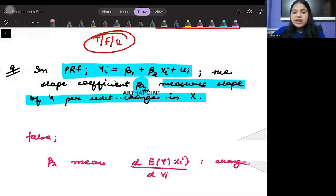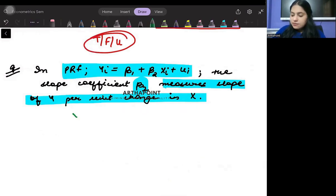Now you need to understand that when I go ahead and write the population regression function, yi equals beta 1 plus beta 2 xi plus ui.